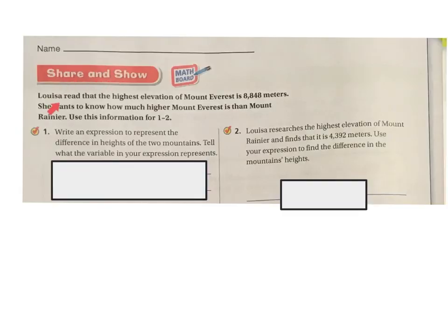Share and Show. Louisa read that the highest elevation of Mount Everest is 8,848 meters. She wants to know how much higher Mount Everest is than Mount Rainier. Use the information for problems one and two. So for these two problems, write an expression to represent the difference in height of the two mountains. Tell what the variable in your expression represents.